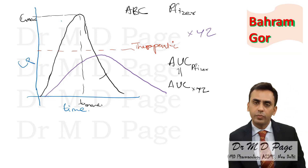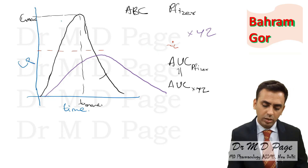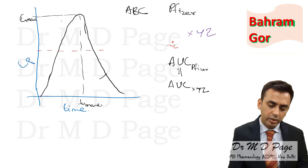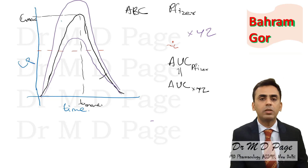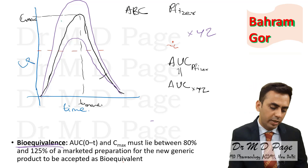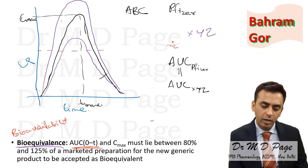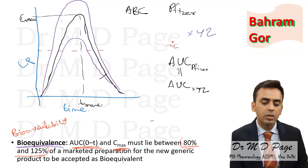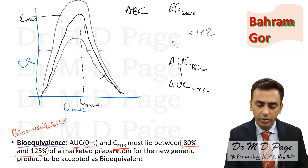No — to say a drug is equivalent, a specific definition is used. This is called bioequivalence. Don't confuse bioequivalence with bioavailability; both are entirely different. Bioequivalence means the area under curve from 0 to time T and the C-max of the newer drug should both lie between 80 to 125 percent of the originally marketed branded drug. Only then is the newer drug said to be bioequivalent to the older drug.